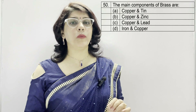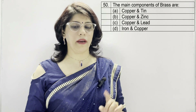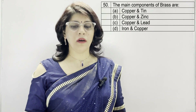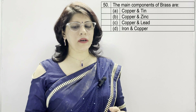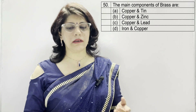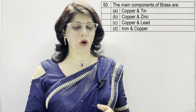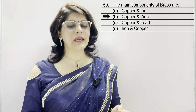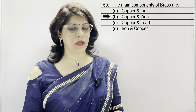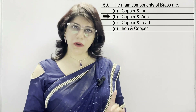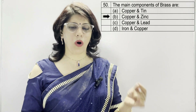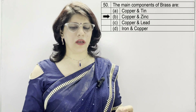Question number 50: the main components of brass are — A: copper and tin, B: copper and zinc, C: copper and lead, D: iron and copper. Option B is correct — copper and zinc are the main components of brass.